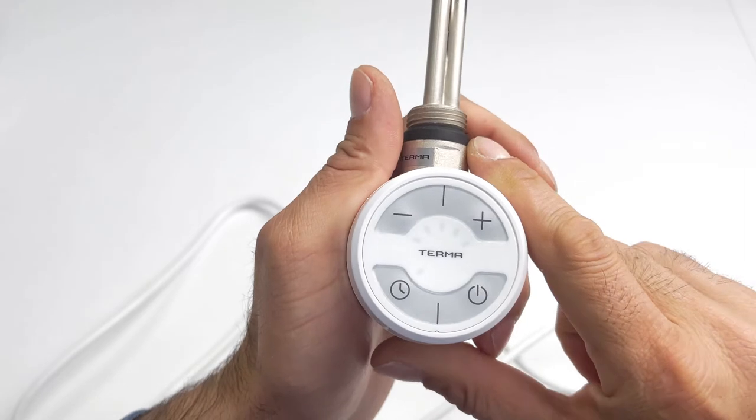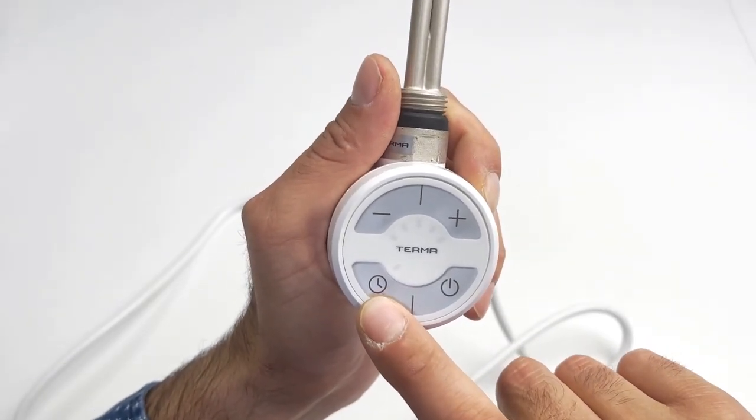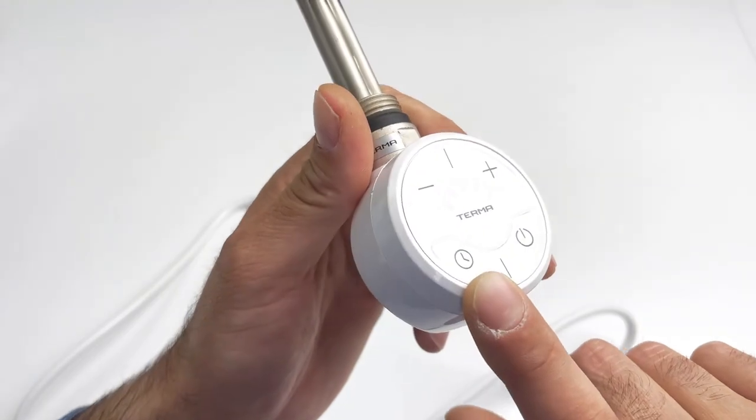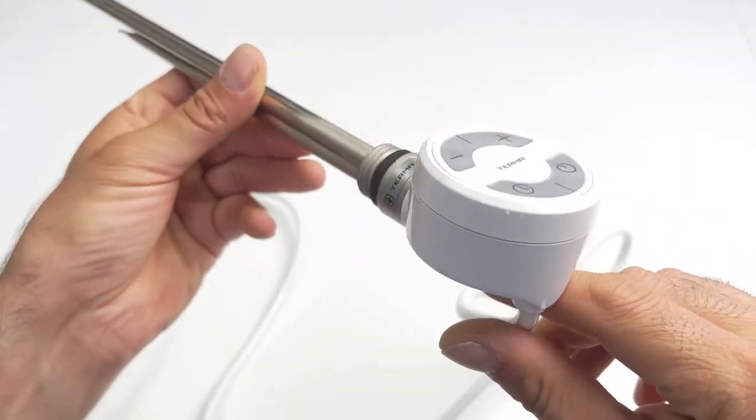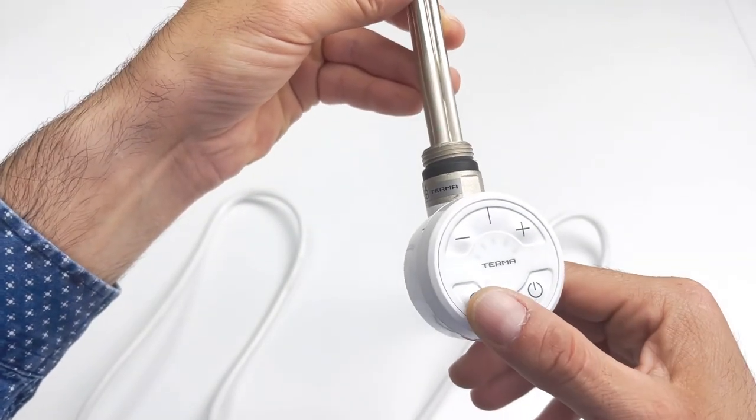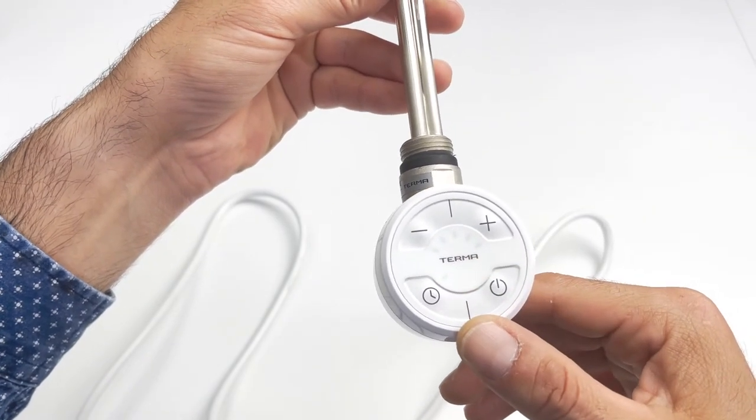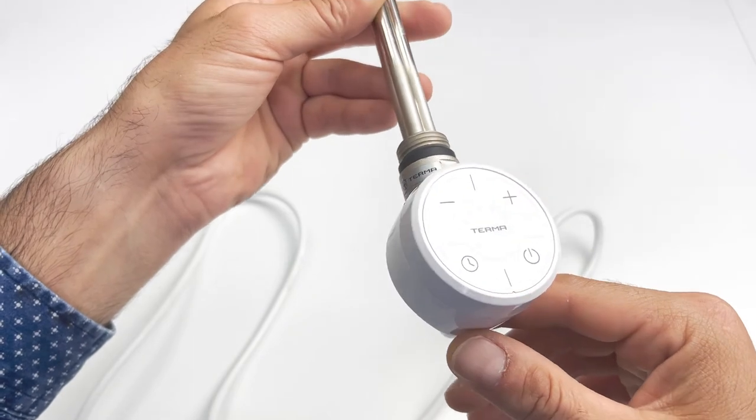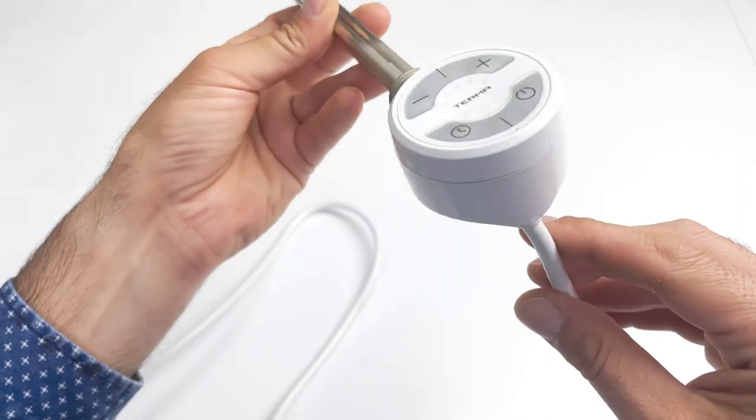On the controller, the booster timer button is fixed to two hours. You cannot change the length of the time or program it. Once you press it, it will turn the element on for two hours, maintain the temperature you set it up, and turn itself off after two hours. So you don't have to go back and turn it off.